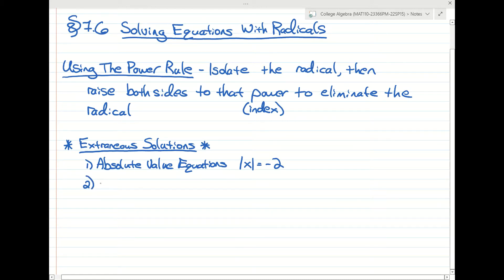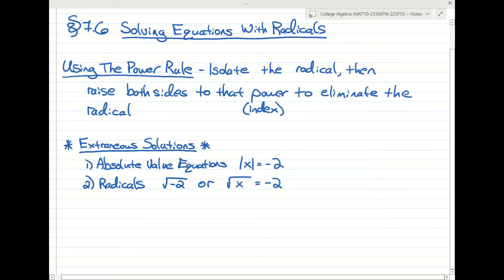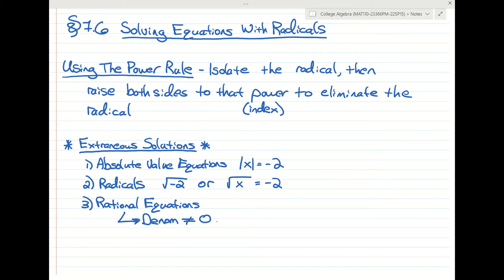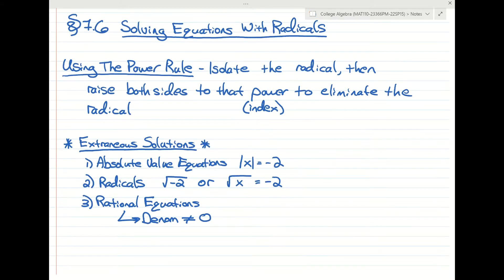The second time extraneous solutions can occur is with radicals, which we'll see today. The deal with radicals is you can't have a radical that is a negative number, or have a radical equal to a negative number. The third type is with rational equations, where the denominator can't equal zero — we talked about this when looking at the domain of rational equations.